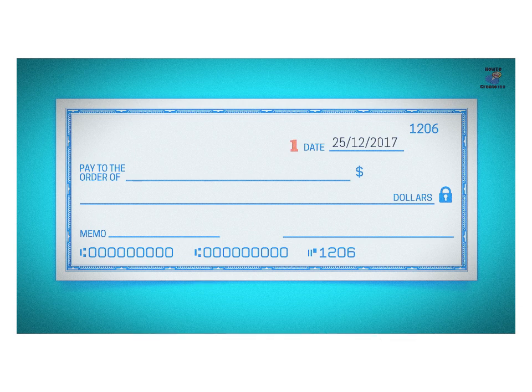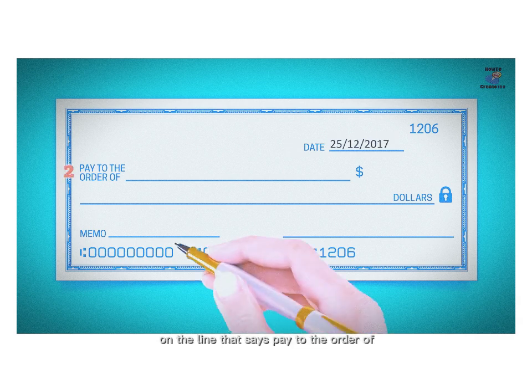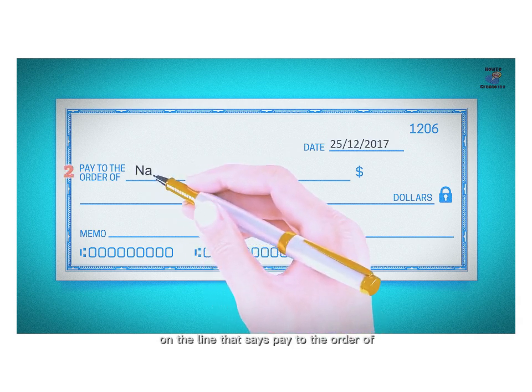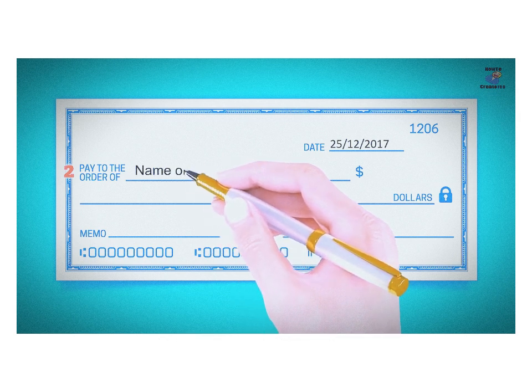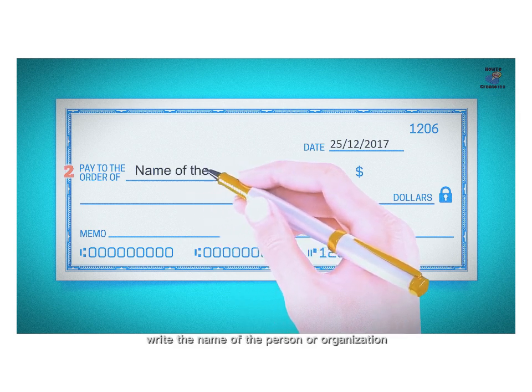Number 2: Payee. On the line that says 'Pay to the order of,' write the name of the person or organization you are paying.